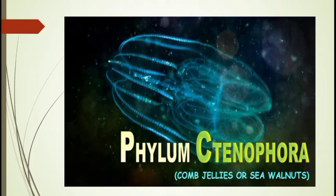Phylum Ctenophora — 'cteno' means comb, 'phora' means bearing. So they are also called comb jellies or sea walnuts, and are exclusively marine forms. The term Ctenophora was coined by George Q. Weir, and the phylum includes about 50 species.